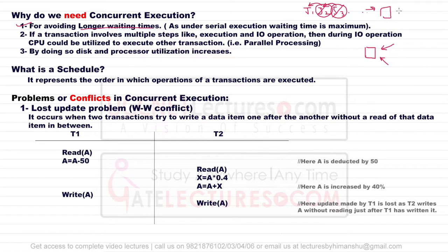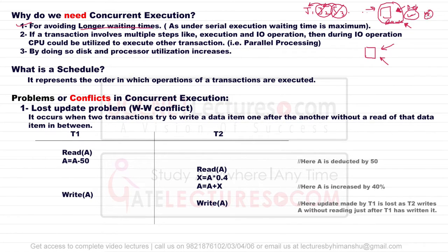For example, in a bank account, one person can deposit funds while another also deposits simultaneously without waiting for each other. To complete a job faster, having two or more people working on the same data items simultaneously is beneficial, so we want to avoid longer waiting durations.